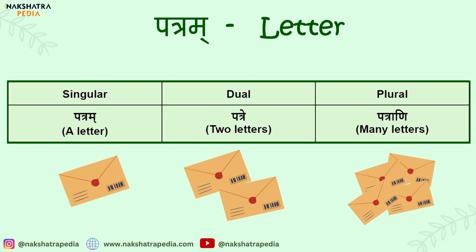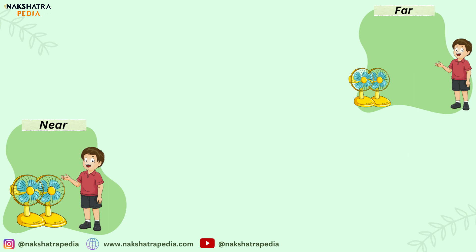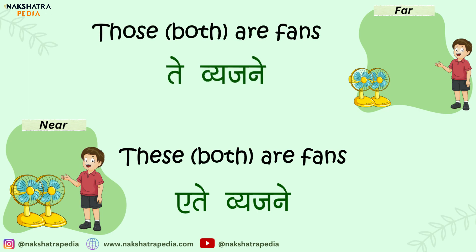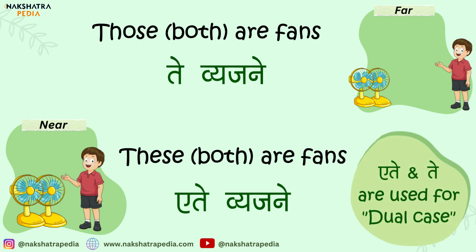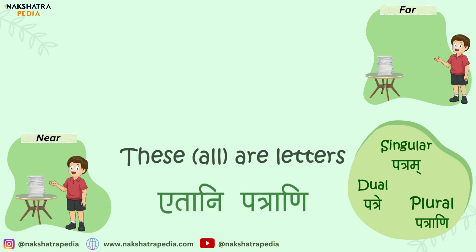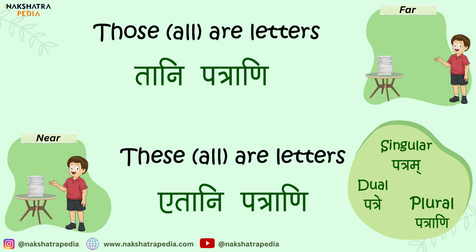Now let's take the object fan, that is vyajanam, and make a few sentences. If the sentence is 'these are fans', then ete vyajane if they are near and te vyajane if they are far — so the sentence would be 'those are fans'. Ete and te are used for the dual case. For plural, taking the word letter: a letter is patram and the plural is patraani. So etani patraani means 'these are letters', while tani patraani means 'those are letters'.